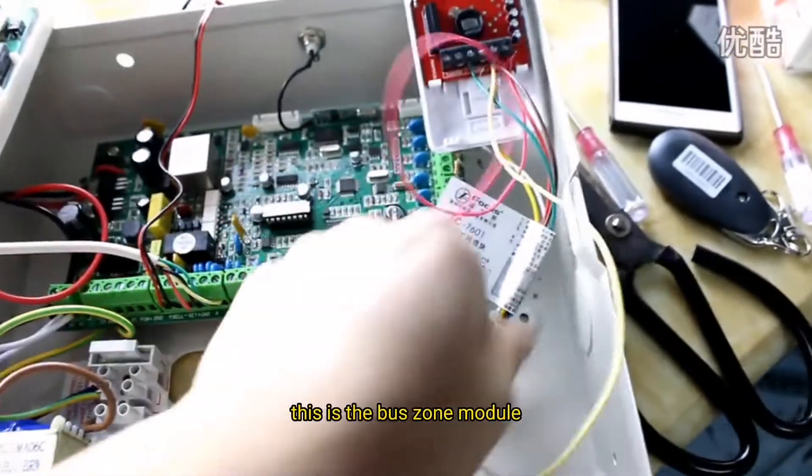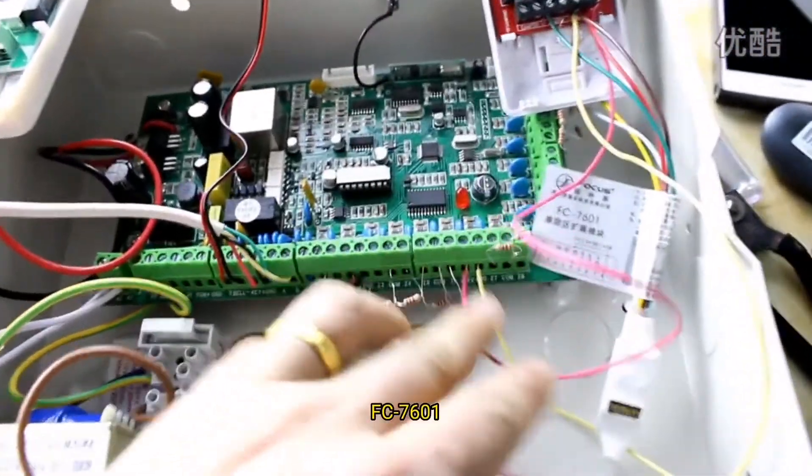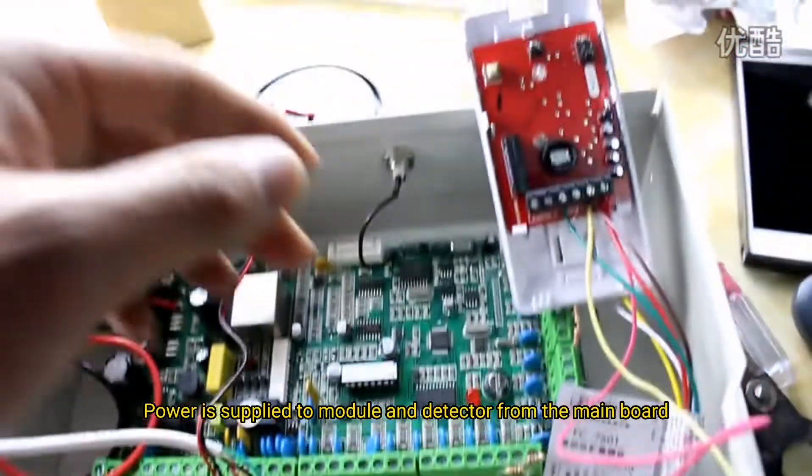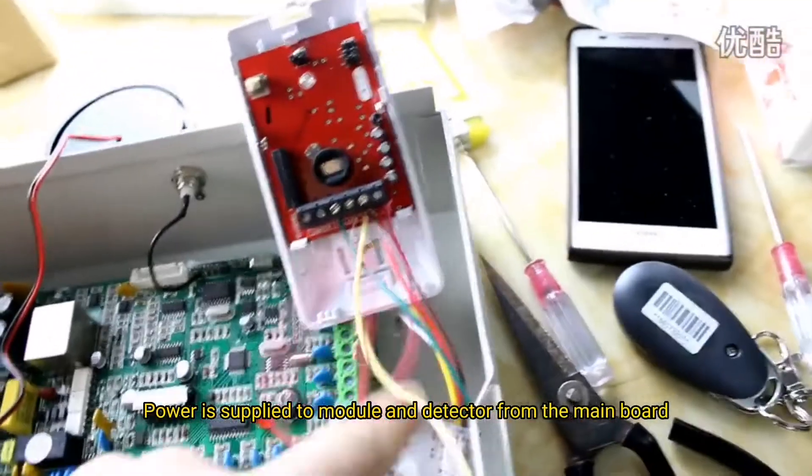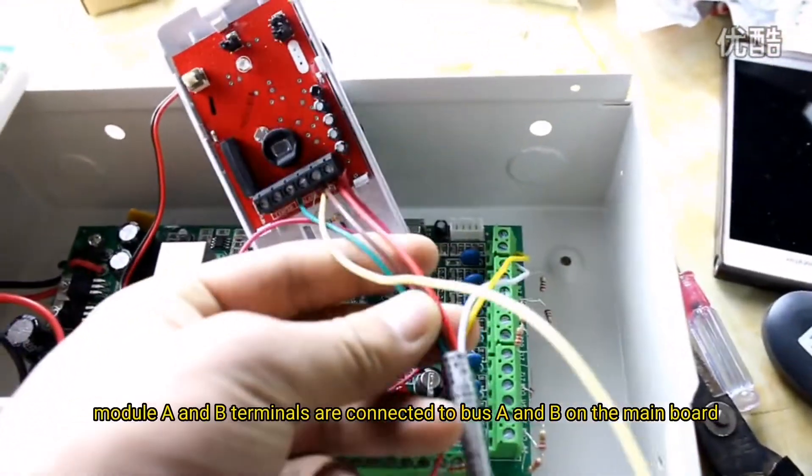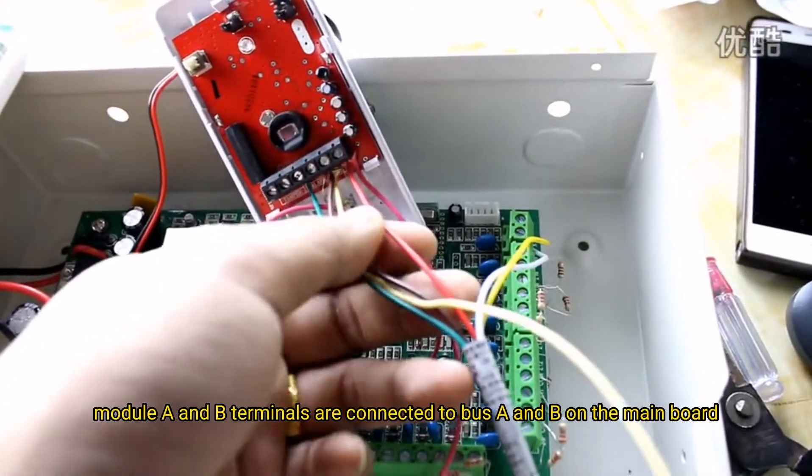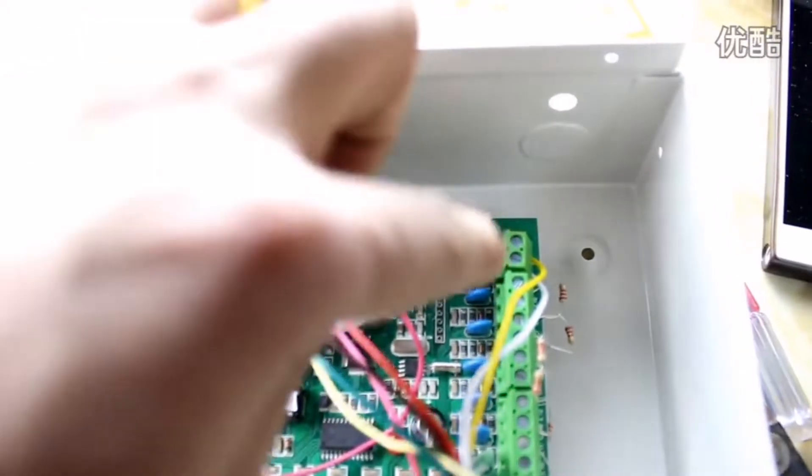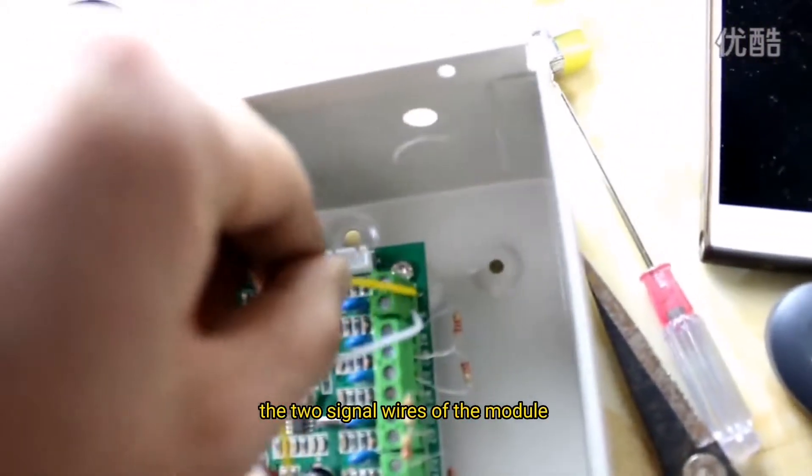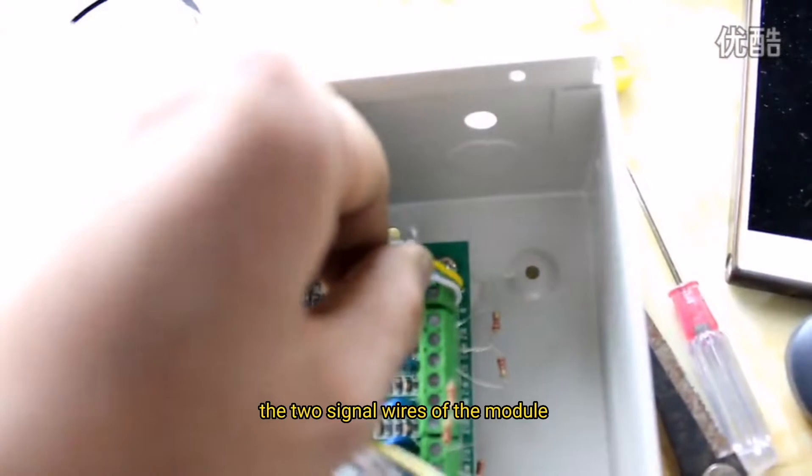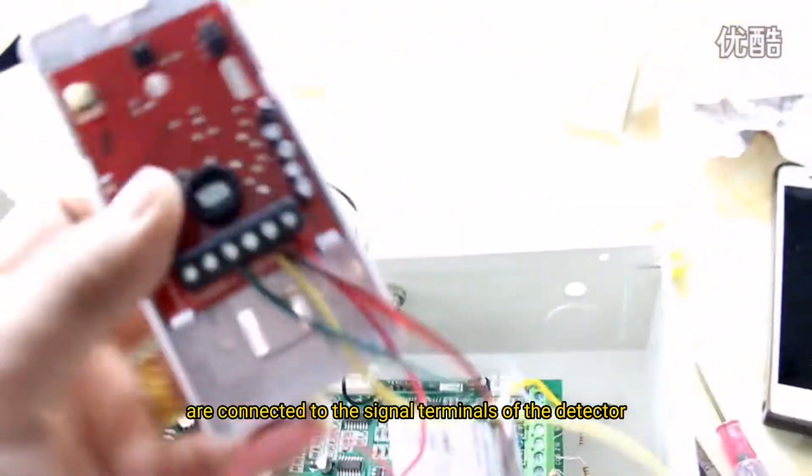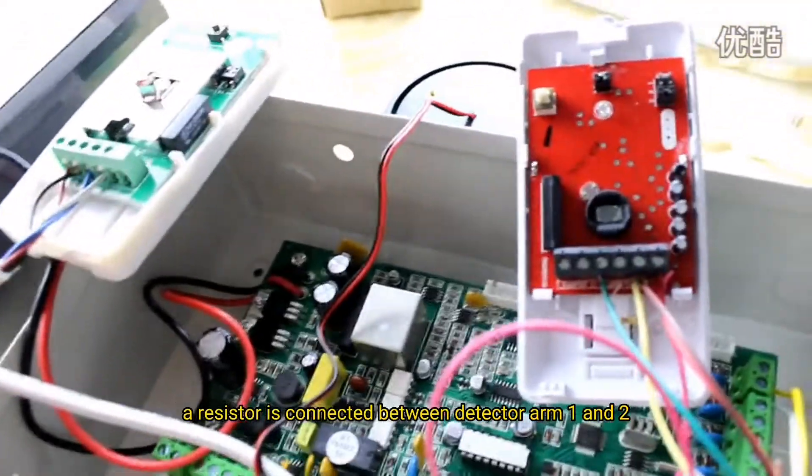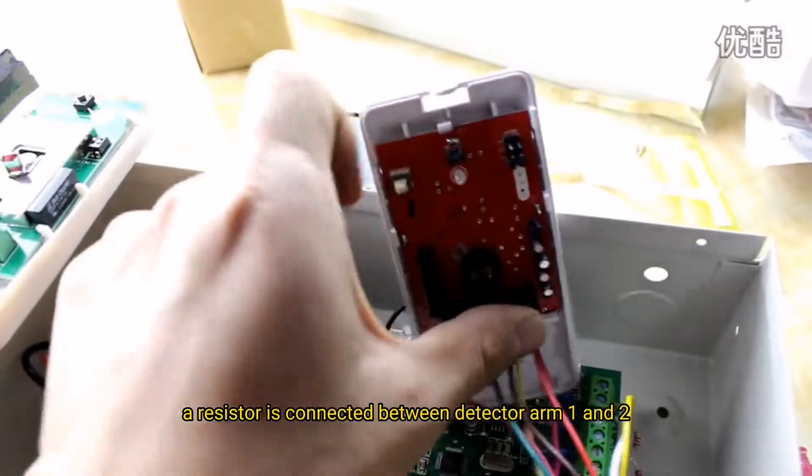This is the Buster module FC7601. Power supply to module and detector from the main board. Module A and B terminals are connected to bus A and B of main board. The two signal wires of the modules are connected to the signal terminal of the detector. A resistor is connected between detector alarm 1 and alarm 2.